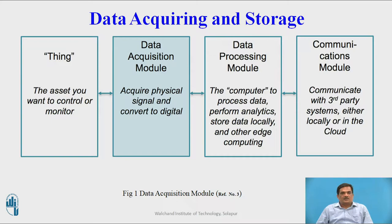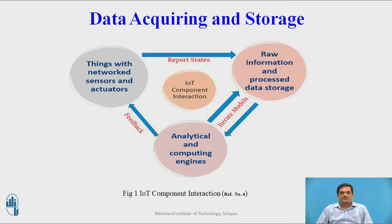The sensors and actuators will sense the information and send it to the data acquisition model. The acquisition model will convert that acquired physical signal into digital signals. Then the data processing model will receive those converted digital signals, process them, perform analytics, and store it either locally or in edge computing. Once analyzed and stored, that data will be communicated to the user via the communication model.